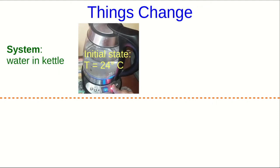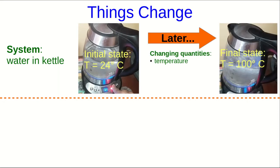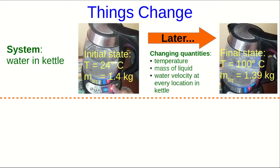So for example, this system starts at a temperature of 24 degrees Celsius, and later on it's at 100 degrees Celsius. So a quantity has changed — that's a change in the state of the system. But remember that the state is the set of all measurable quantities that describe the system. So for example, if we wait around long enough, we would start to notice that the amount of liquid water in the kettle decreases. That's another change in the state.